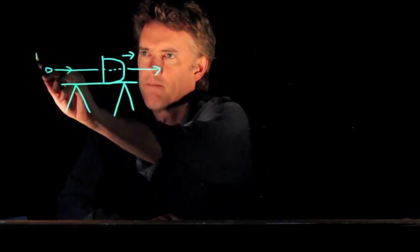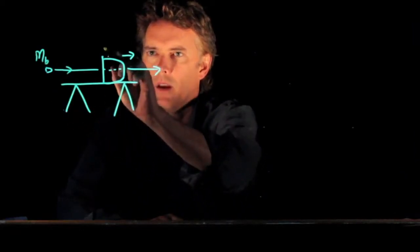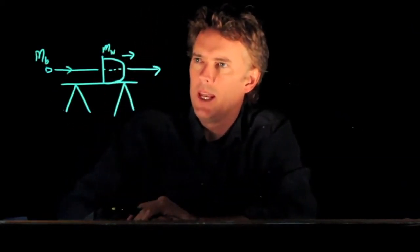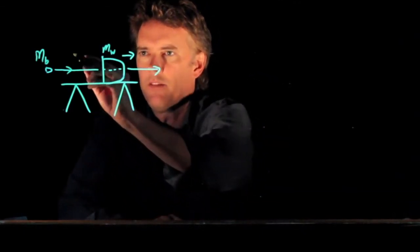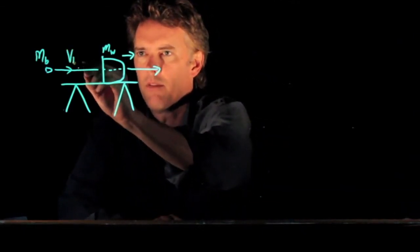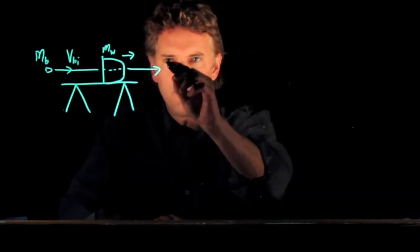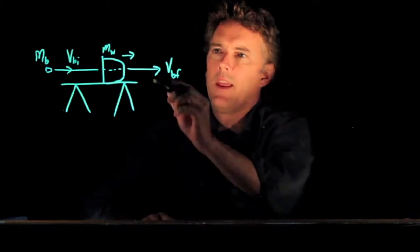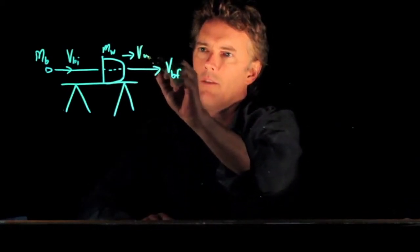We'll have the mass of the bullet and the mass of the wooden block, mb and mw. This is the speed of the bullet initially. This is the speed of the bullet finally. And then this is the speed of the wood.